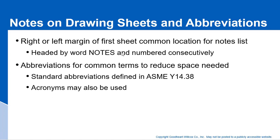The notes list is headed by the word 'notes' and they're numbered consecutively: Note 1, Note 2, Note 3, Note 4. You can use abbreviations for common terms to reduce the space needed on your drawings. ASME 14.38 tells you about that.